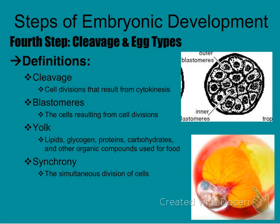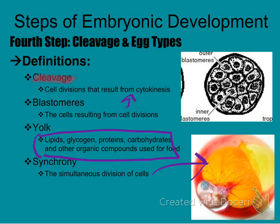Step four is cleavage and egg types. Cleavage results from cytokinesis — remember that animal cells form a cleavage furrow. Blastomeres are the cells that result from this division. The yolk — like from a chicken egg — contains lipids, glycogen, proteins, carbohydrates, and other organic compounds that feed the developing embryo. Synchrony refers to the simultaneous division of cells — like synchronized swimming, everything happening at the same time.